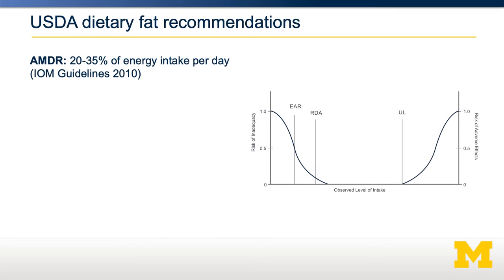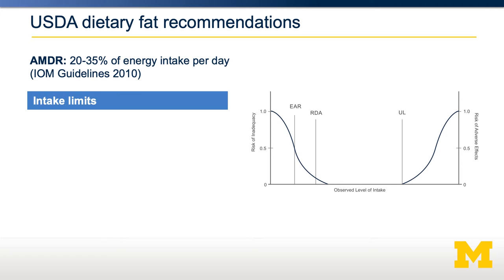The AMDR for dietary fat is 20-35% of our energy intake per day. Most people in America tend to be a little closer to 35% than 20%. We also have specific intake limits. The recommendation is to consume less than 10% of our calories from saturated fats. For somebody eating a 2,000 calorie diet, that would be 200 calories, or, because the Atwater factor of fat is 9 calories per gram, 22 grams of saturated fat per day.